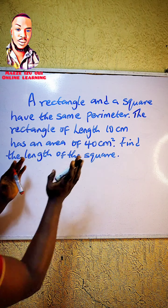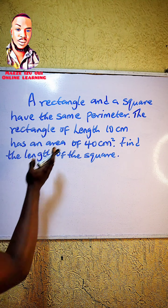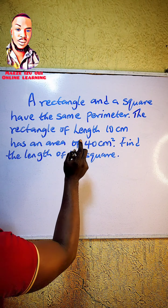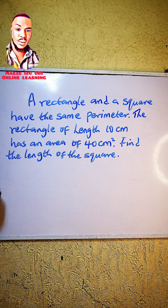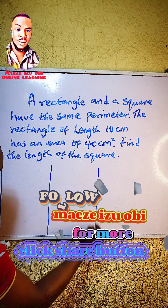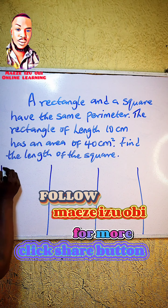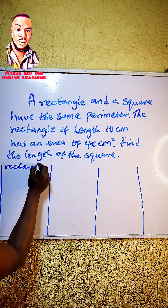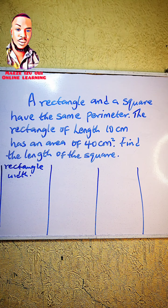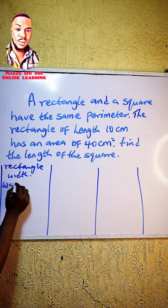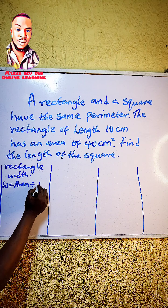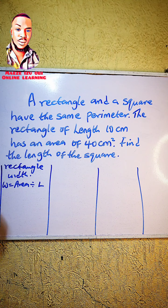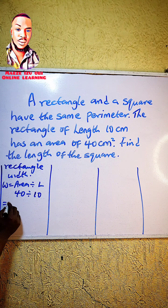First of all, we are going to find the width of the rectangle. To solve for the width of the rectangle when the length is given: width equals area divided by length. The area is 40, divided by the length of 10, so the width equals 4.